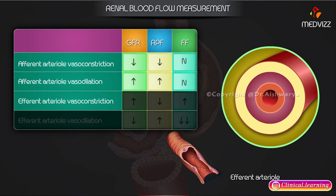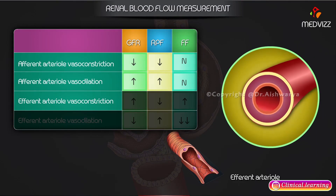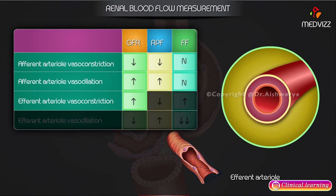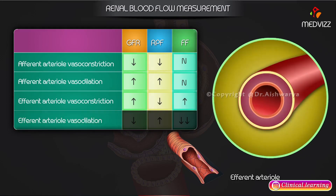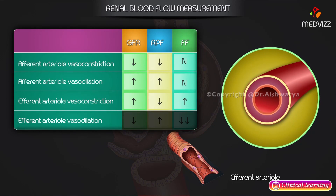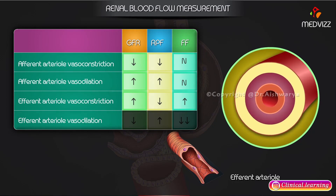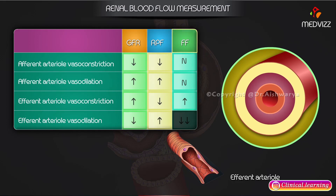Efferent arteriole vasoconstriction: GFR increases, renal plasma flow decreases, and the filtration fraction increases. Efferent arteriole vasodilation: GFR decreases, renal plasma flow increases, and the filtration fraction decreases.